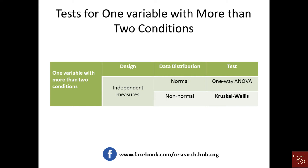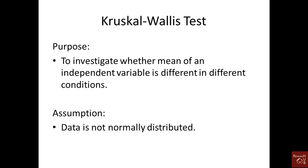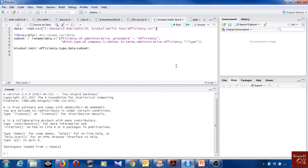When the data is normally distributed we would perform a one-way ANOVA, but in this case the data is not normally distributed, so we use the Kruskal-Wallis test. In this test we investigate whether the mean of the independent variable is different or similar among the different conditions.